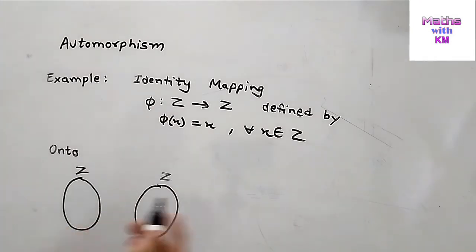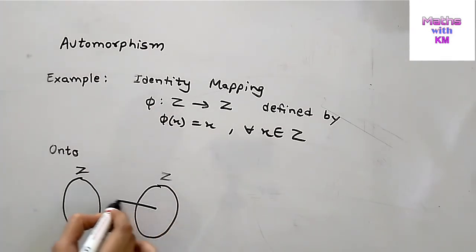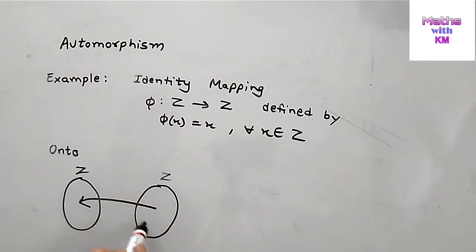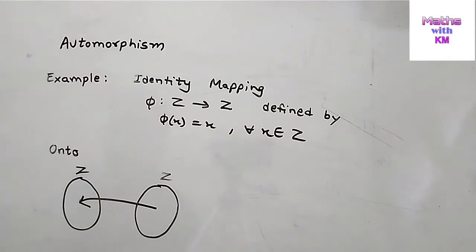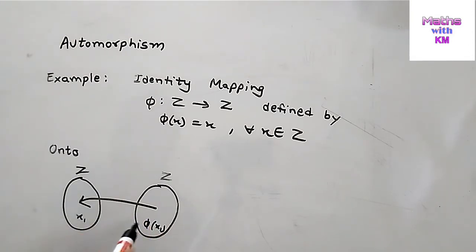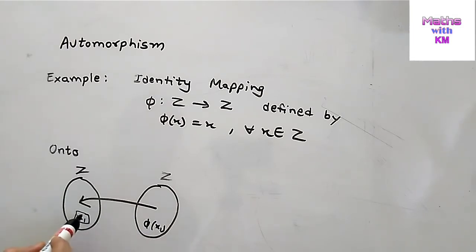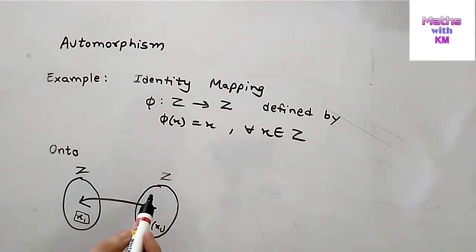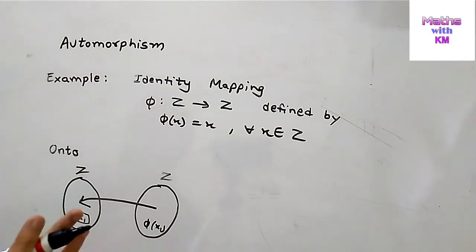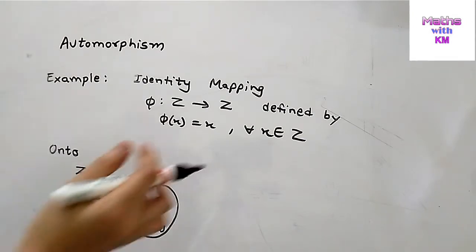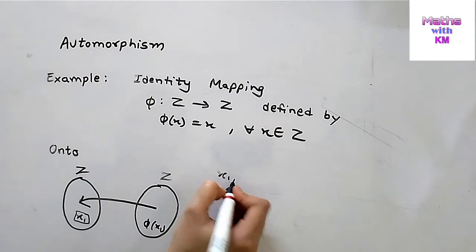For onto: for every element in the codomain there must be a pre-image in the domain. Here x1 is the pre-image and phi of x1 is its image in the codomain. So x1 is the pre-image of phi of x1. Whatever element is present in Z as codomain, we should get a pre-image for it in the domain, then we say the mapping is onto.